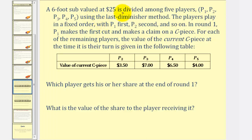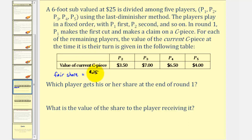Now let's look at two more examples. A six-foot sub valued at twenty-five dollars is divided among five players, P1 through P5. Using the last diminisher method, the players play in a fixed order — P1 is first, followed by P2, P3, and so on. In round one, P1 makes the first cut and claims a C piece. For each remaining player, the value of the current C piece at the time of their turn is given in the table. Each player's fair share is five dollars — the total value divided by the number of players.